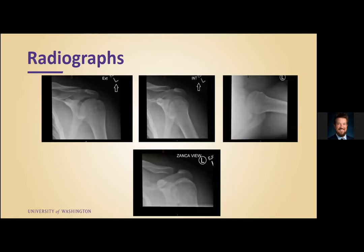We did obtain radiographs, and we wanted to be sure that we got our standard AP and axillary lateral views, but also wanted to make sure that we got a Zanka view as well, because this is the most accurate view to evaluate suspected AC joint injuries. This is because with standard AP views the AC joint will be overpenetrated, and small or subtle lesions can be overlooked. In this case, his radiographs were normal.